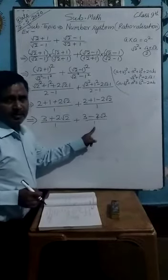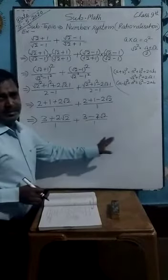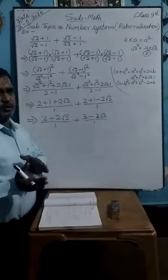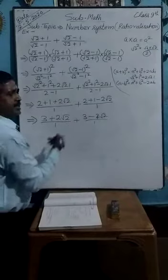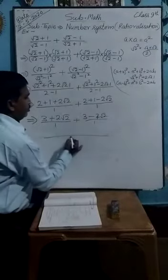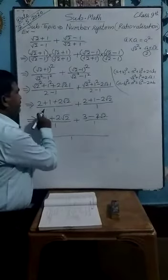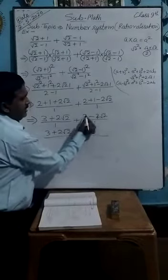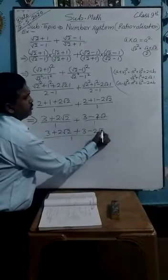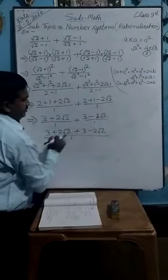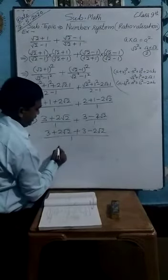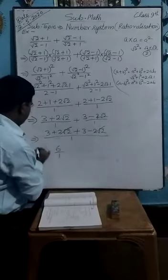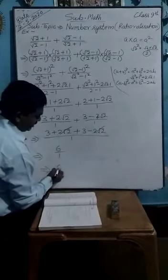If the denominator is same, take it as common and solve. Since both denominators are 1, you get 3 plus 2 root 2 plus 3 minus 2 root 2, upon 1. Same kind values: 3 plus 3 gives 6, and plus 2 root 2 and minus 2 root 2 cancel out. Upon 1, it means you have got your answer as 6.